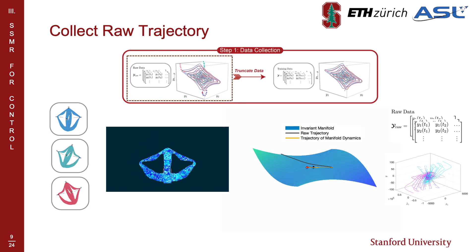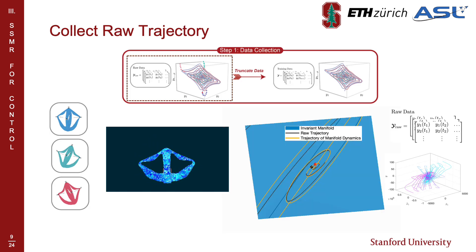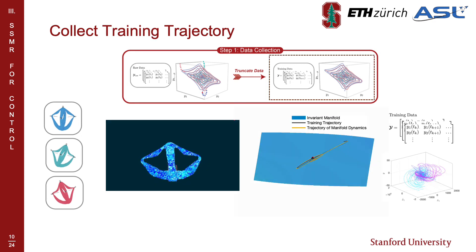In step one, we collect trajectories of the robot as it decays towards its equilibrium point. Notice that the robot exhibits an initial transient onto the manifold. Having identified this transient, we truncate it out of the dataset to ensure that the training trajectories are as close as possible to the invariant manifold.